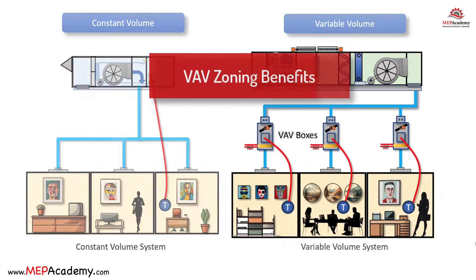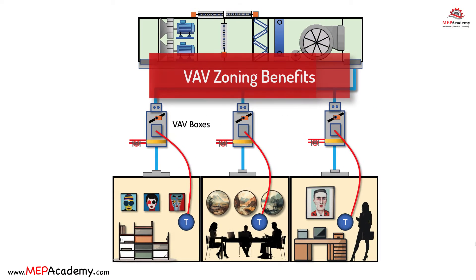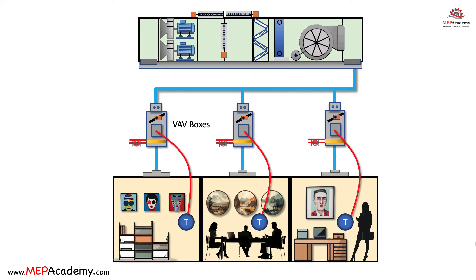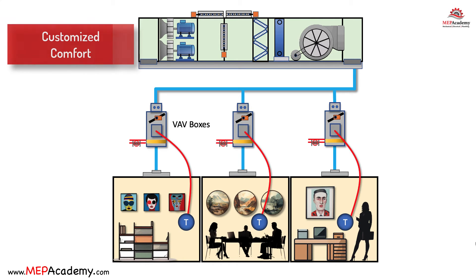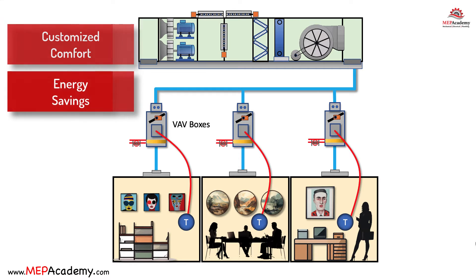VAV System Benefits of Effective Zoning. Efficient zoning, as seen in VAV systems, offers several advantages. Customized Comfort: occupants enjoy personalized comfort levels in each zone, enhancing satisfaction and productivity. Energy Savings: zoning reduces unnecessary energy consumption, leading to lower utility bills and a reduced carbon footprint.